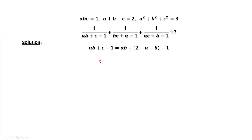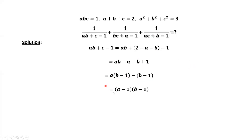Simplify the right-hand side. Group the first terms — we have A as a common factor, so factor A out. We have A times B minus 1. Then group the last two terms: minus B minus 1. B minus 1 is the common factor, so we factor B minus 1 out. Then we have A minus 1 times B minus 1.